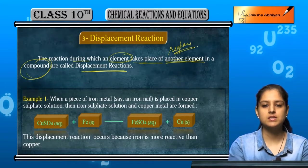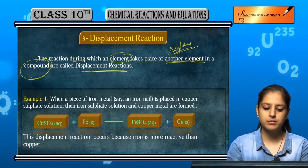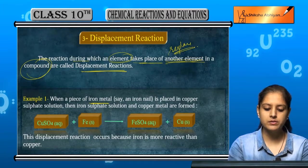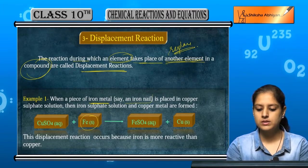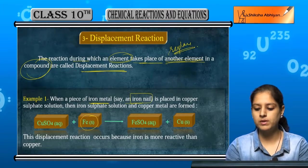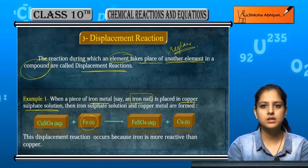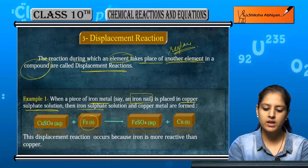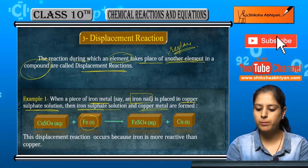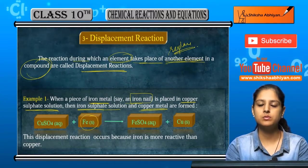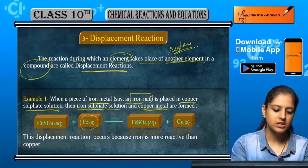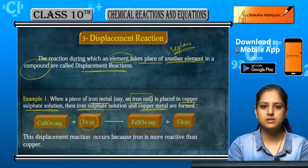For example, when a piece of iron metal, that is Fe, in the form of an iron nail, is placed in copper sulfate solution, then iron sulfate is formed and copper metal is formed as product. CuSO4 is copper sulfate.